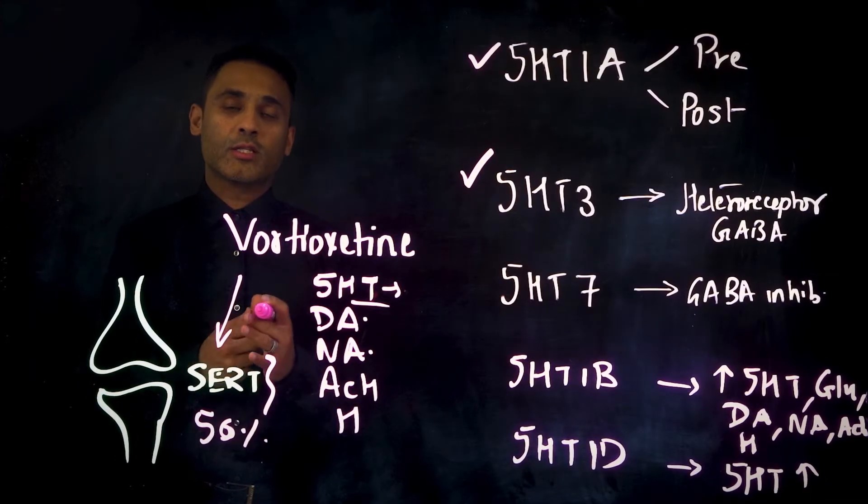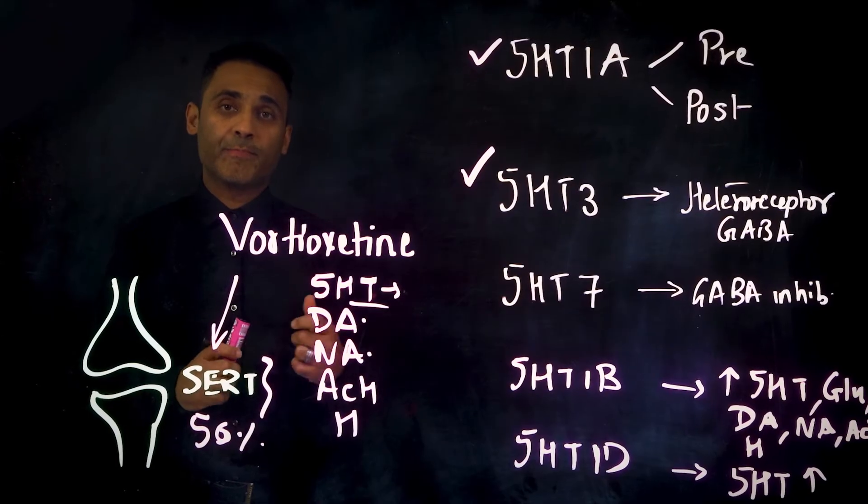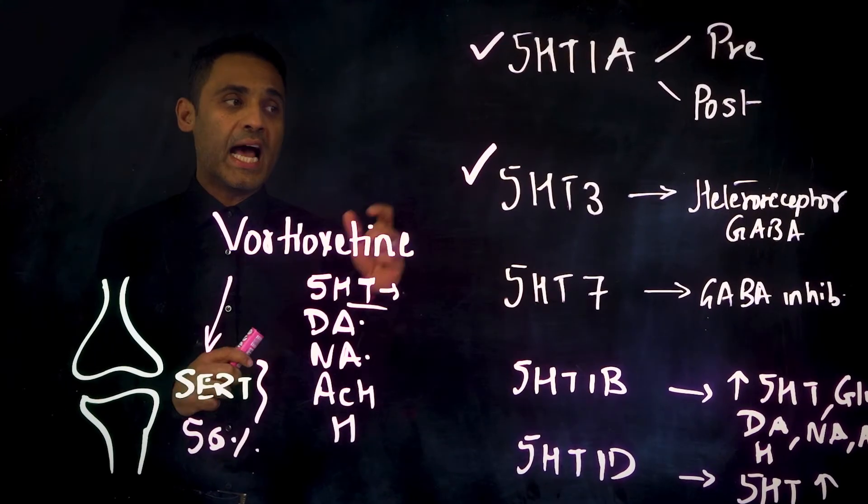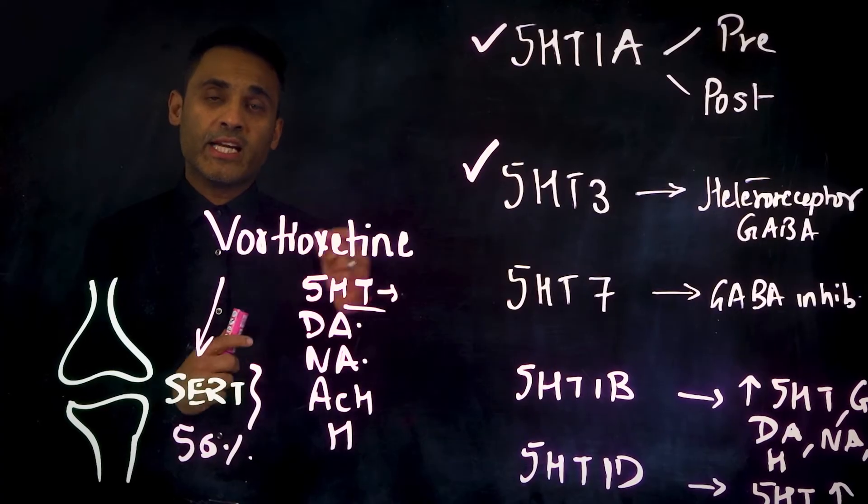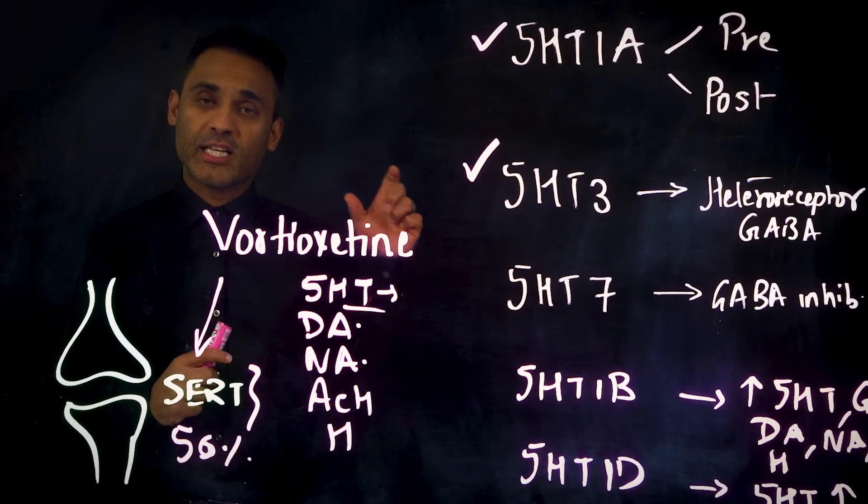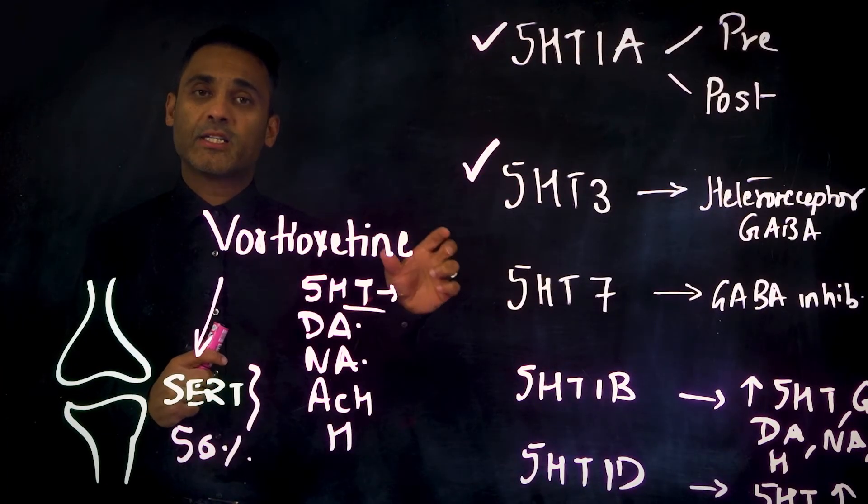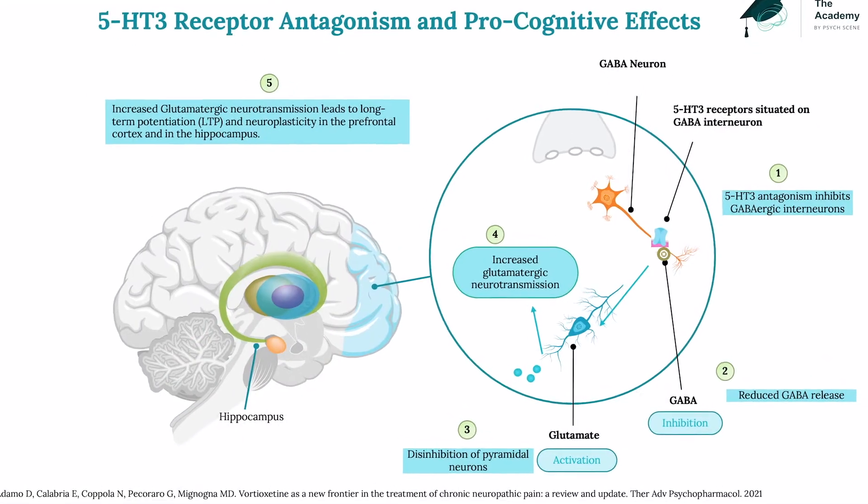There's the 5-HT3 receptor. Vortioxetine is a 5-HT3 antagonist at this particular receptor. And interestingly, this particular receptor is situated on the GABA interneuron. And this is known as a heteroreceptor.